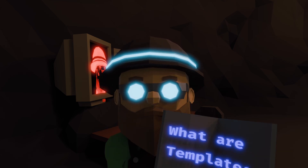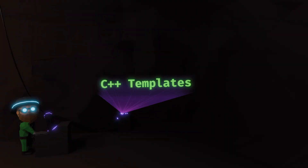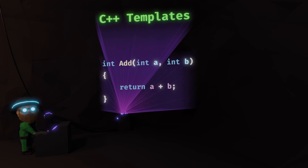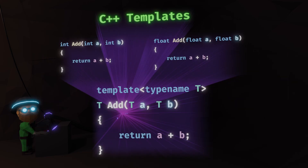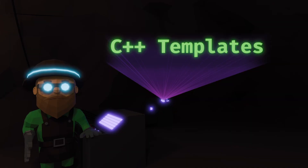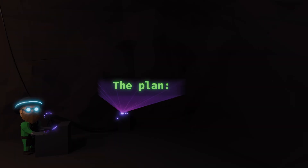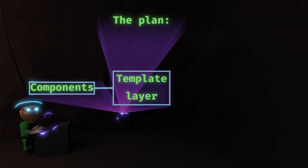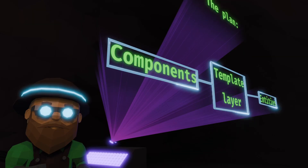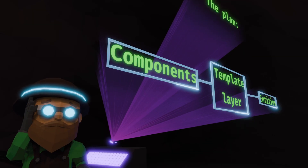That's when I remembered that C++ has templates. Templates are like a flexible blueprint for code. Here's a quick example: let's say we have a function that adds two numbers together. This function works with ints, but what about floats? We don't want to rewrite the function, so we turn it into a template. By adding a generic parameter T, we can call the function with any type that can be added together. Naturally, I thought — this is it. This will save me from writing a bunch of useless code.